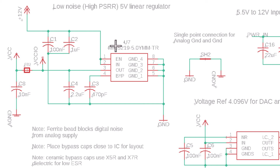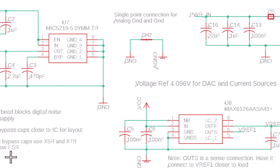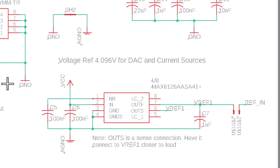One last thing about bypass caps: we talked about using different values and having them close to the chip. When using ceramic caps, there are many dielectric choices and different ones have different advantages. For bypass caps you typically want to use dielectrics with low ESR like X5R and X7R. We choose those dielectrics for bypass caps in this application to ensure low ESR.